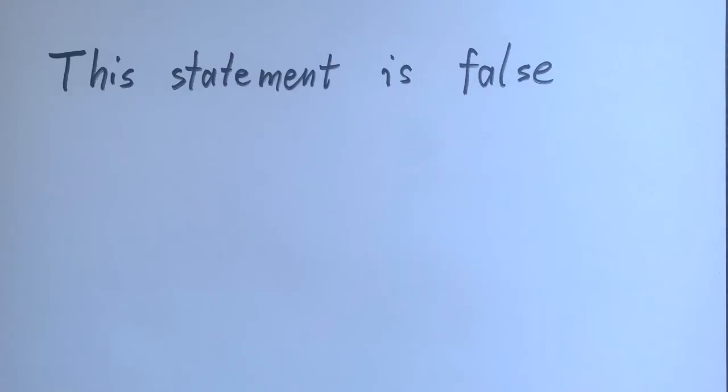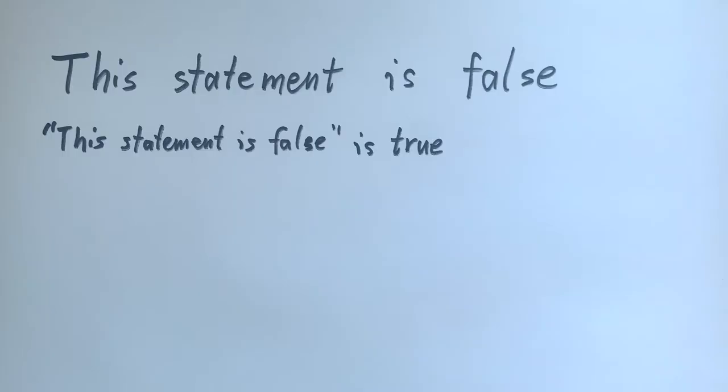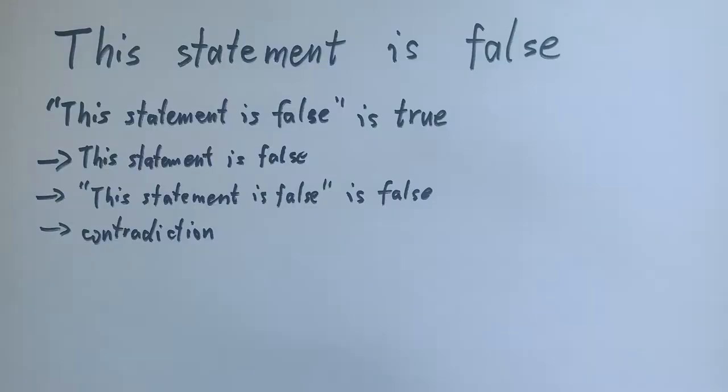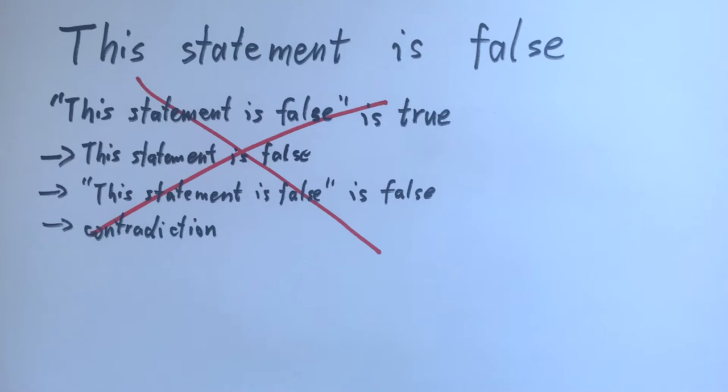Look at the sentence, this statement is false. Is it true or false? If it's true, that means that this statement is false is true. So it's false. But the statement can't be both true and false at the same time.